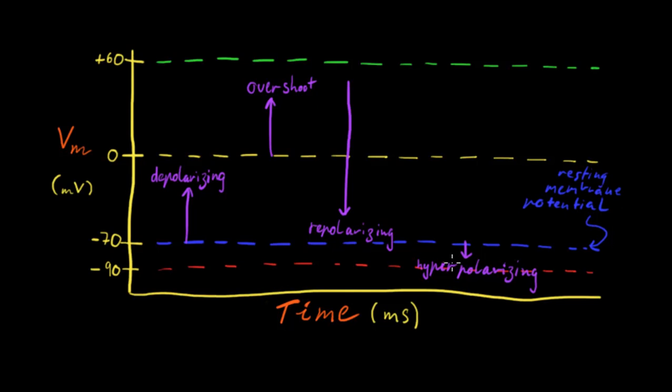Of course, our resting membrane potential is negative 70 millivolts, and that's in blue. And we say that if it goes above the resting membrane potential, it's depolarising. If it becomes more positive in respect to the outside of the cell, it's overshooting.